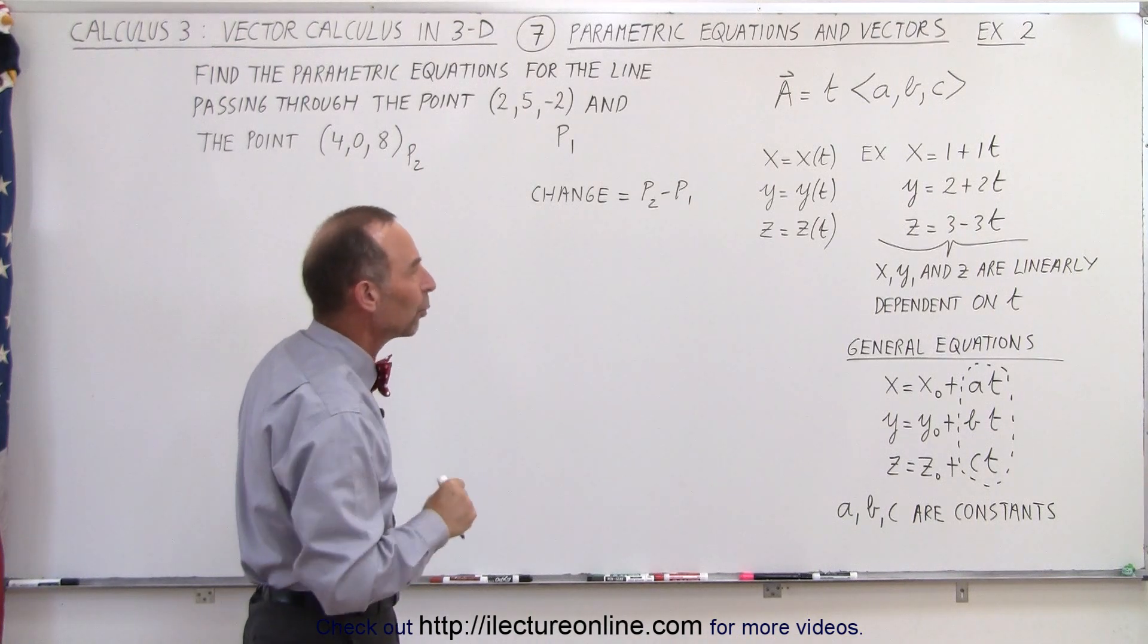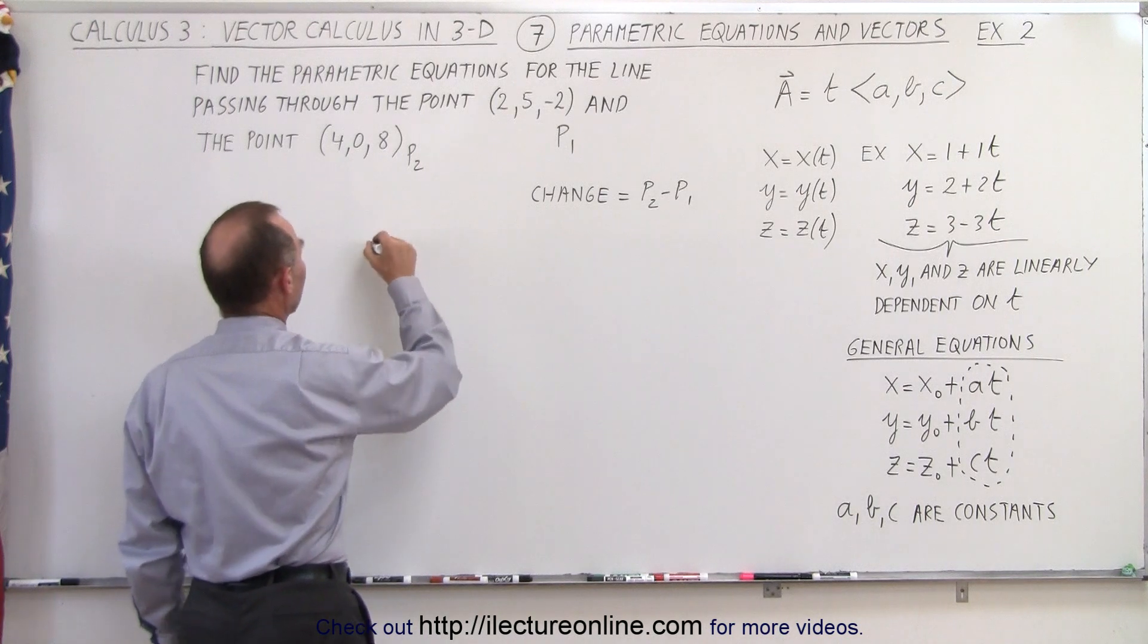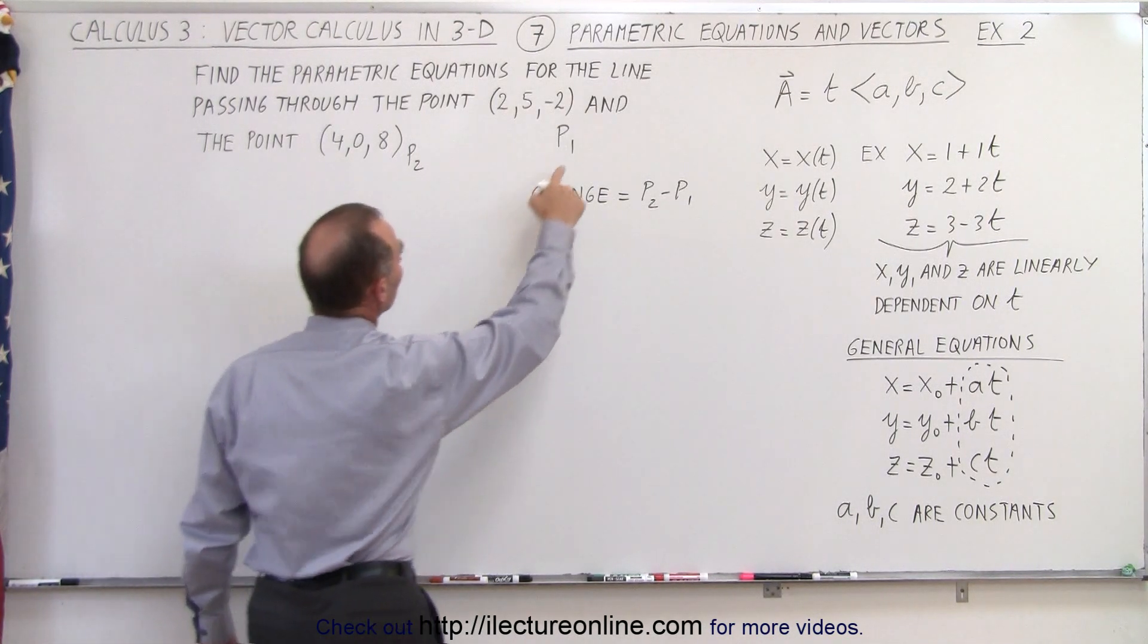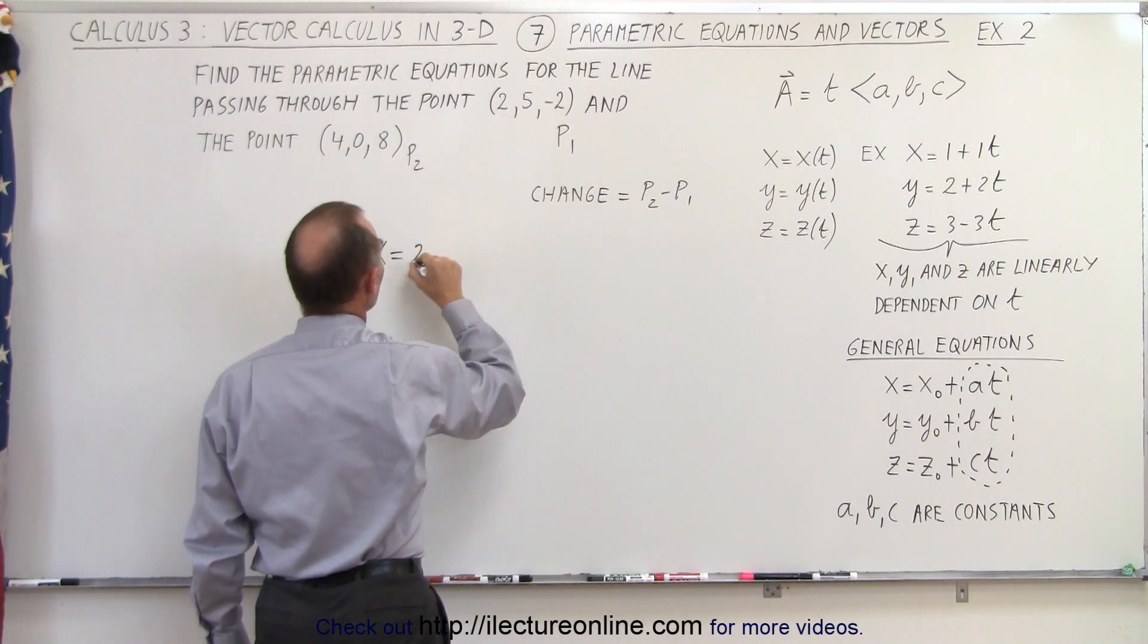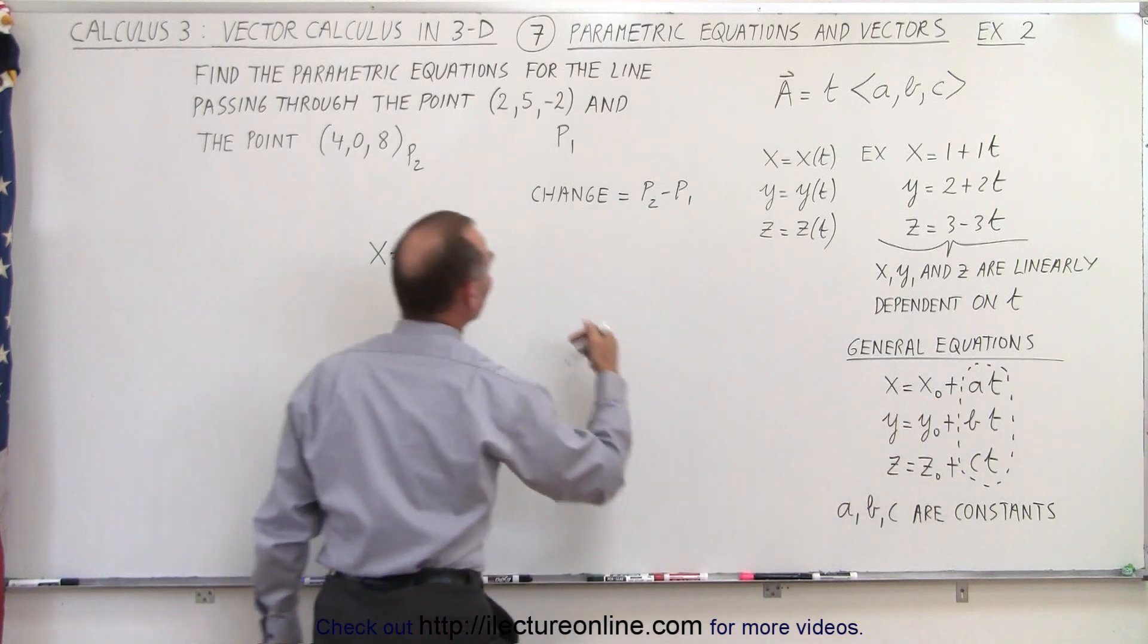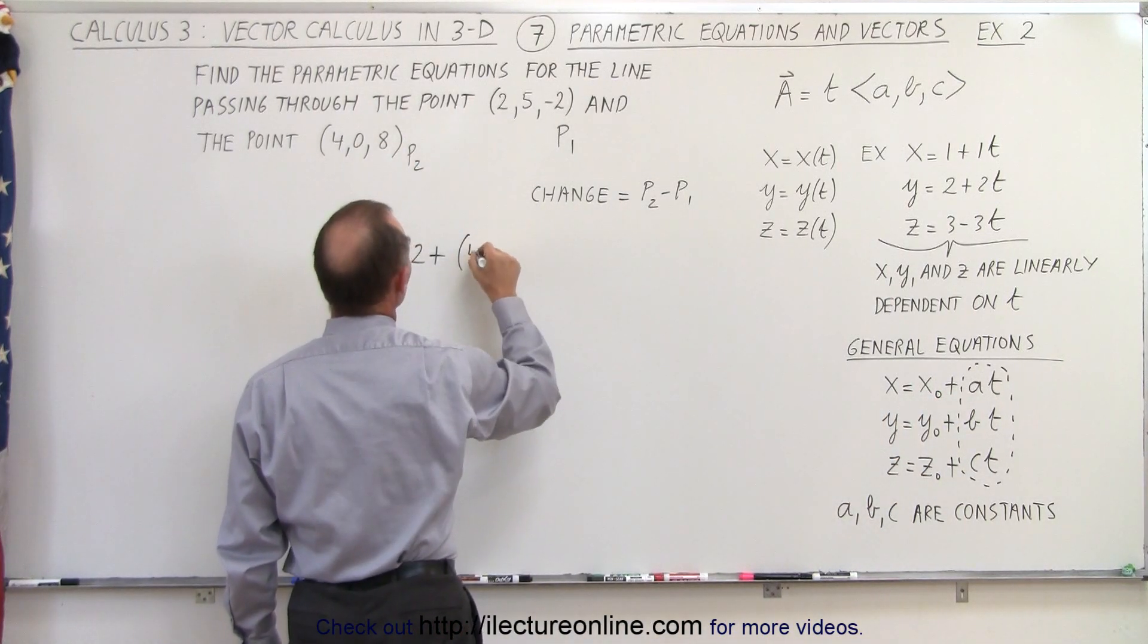So how much is the change in x, y, and z as t changes by one unit? So that means that the parametric variable x is going to be defined as the initial position, let's call it 2 for point 1, plus the change, the slope, which is the value at point 2 minus the value at point 1. So it's going to be 4 minus 2 times the parametric variable t.